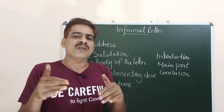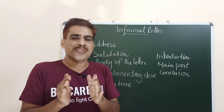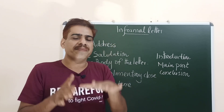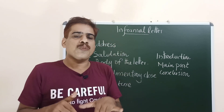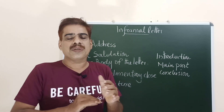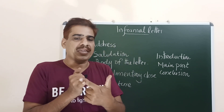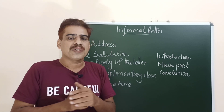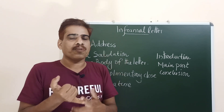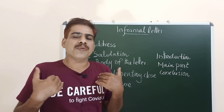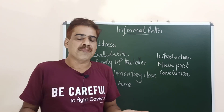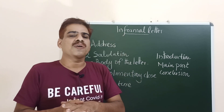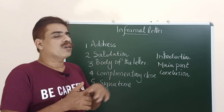Then write the date, for example: 25th October 2020. I will give you a specimen with a perfect model of an informal letter in the coming video. Today we are discussing only the points to consider while preparing a letter. The address part is complete if you write the place and date. Then you write the salutation, which means you address to whom you are writing. For a friend, you write 'Dear Shaji,' for your mother 'My dear mother,' or 'My dear friend.'